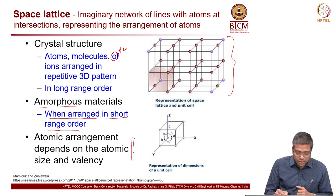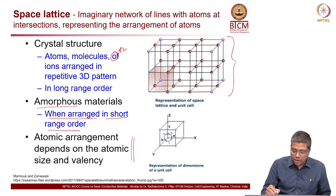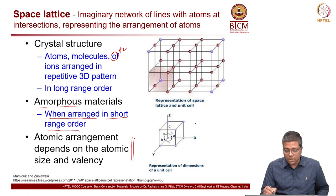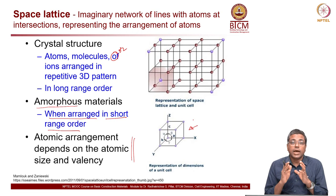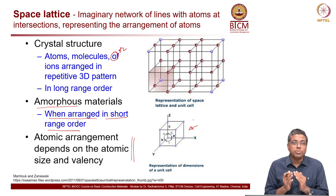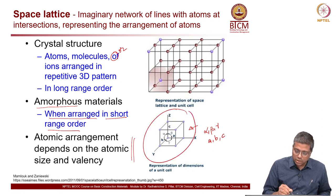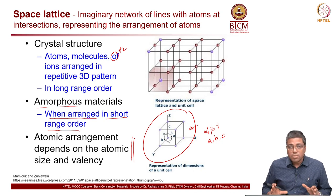Atomic arrangement also depends on the atomic size and valency. Each unit cell — not necessarily cubic — can be described in terms of the dimensions of each of its edges (A, B, and C) and the angles between those edges (alpha, beta, and gamma) as you see in this sketch. This is essentially the building block for any metal we talk about.